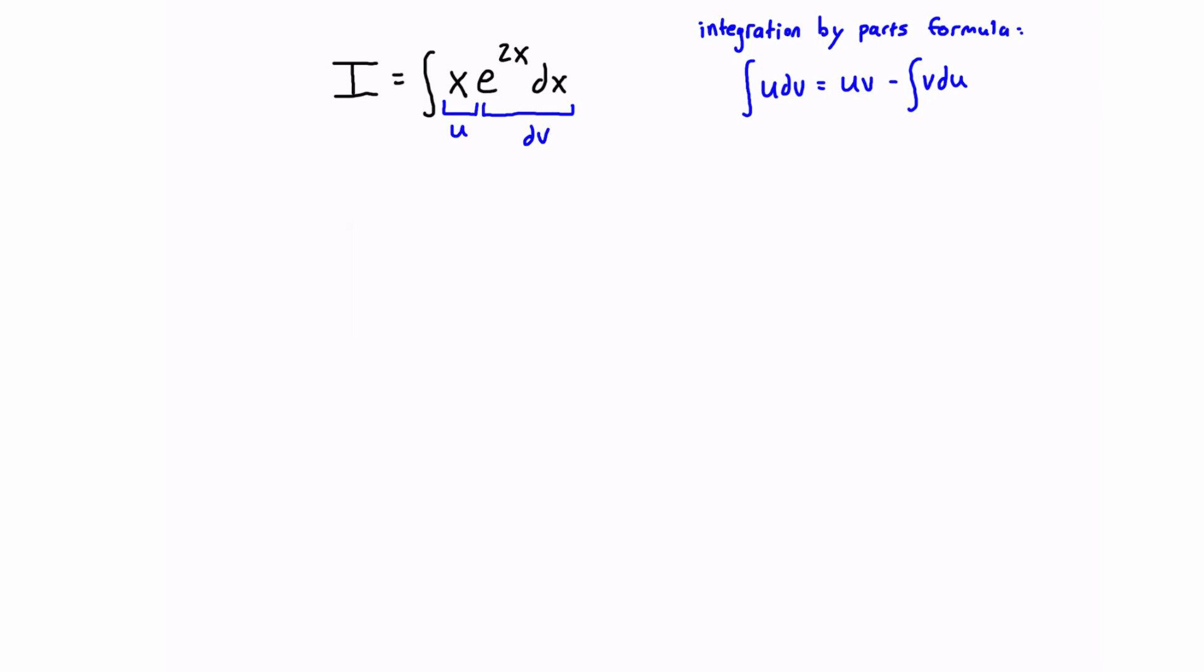So taking u as x, if we derive this with respect to x, we're going to have du/dx is just equal to 1, and then we can rearrange, so we have du is equal to 1 dx, effectively just multiplying dx to both sides.